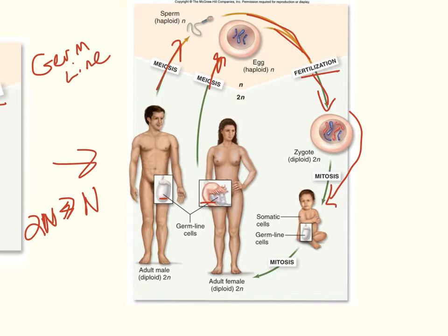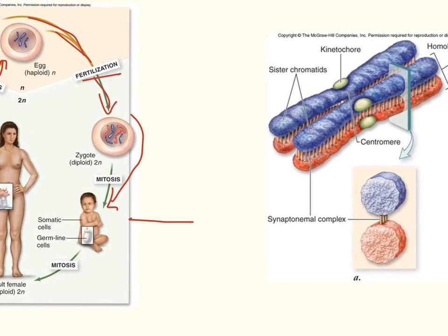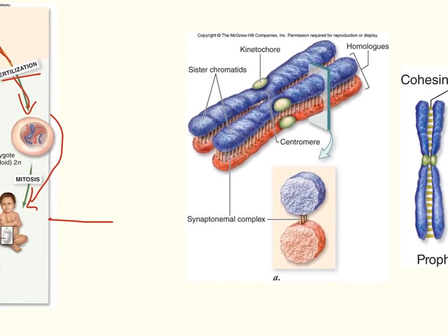We start with prophase I. Prophase I has the same preparation as mitosis: the nuclear envelope breaks down, nucleoli disappear, chromosomes condense, and in animal cells, centrioles migrate to opposite poles and the spindle apparatus begins to form. Along with those events, two additional things occur in meiosis: synapsis and crossing over.